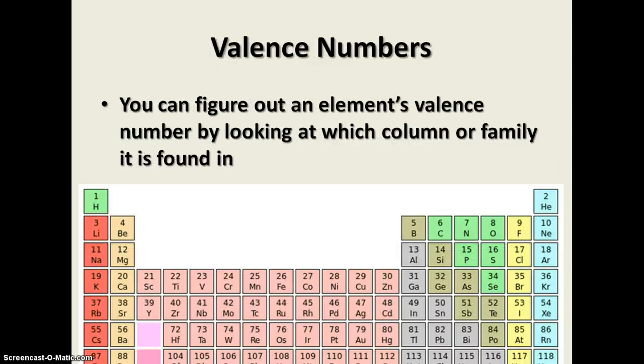You can figure out an element's valence number by looking at which column or family it's found in. So when we look at the periodic table here, we said that there are 18 columns. Let's start off with this first column over here, the one that's headed by hydrogen. Now, you know hydrogen is a very small atom. It has one proton, one electron. That's all there is to it. Every once in a while, you'll have an atom of hydrogen that has a proton and a neutron. That's just another isotope of hydrogen. But the number of protons and the number of electrons are what's important here.